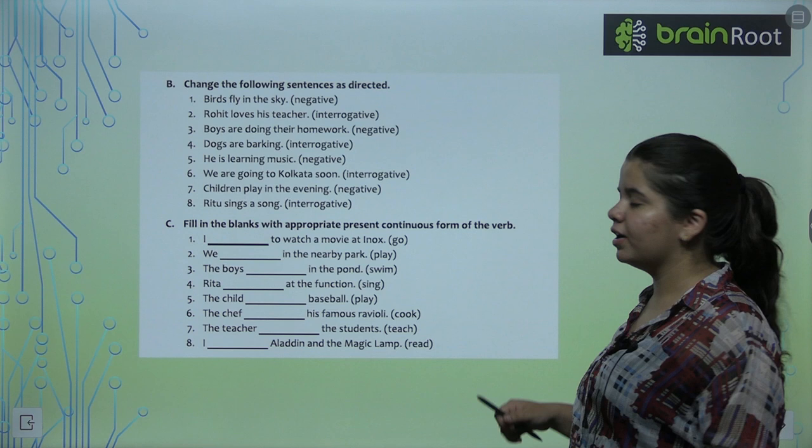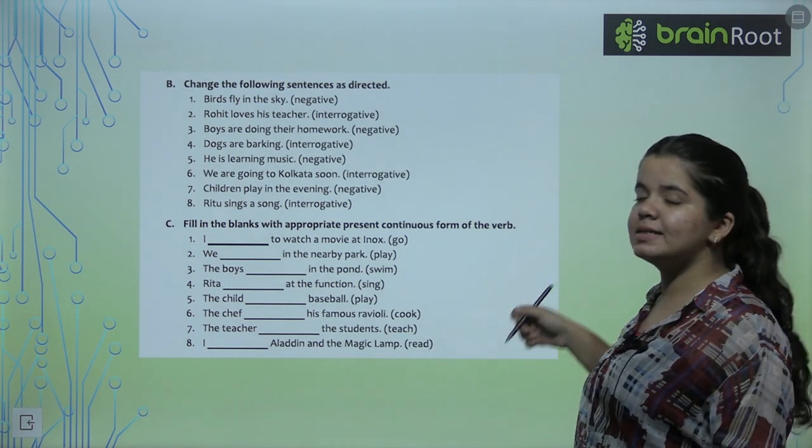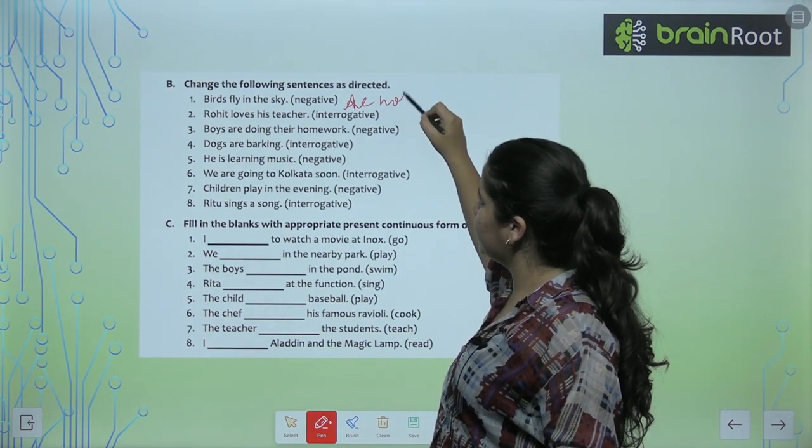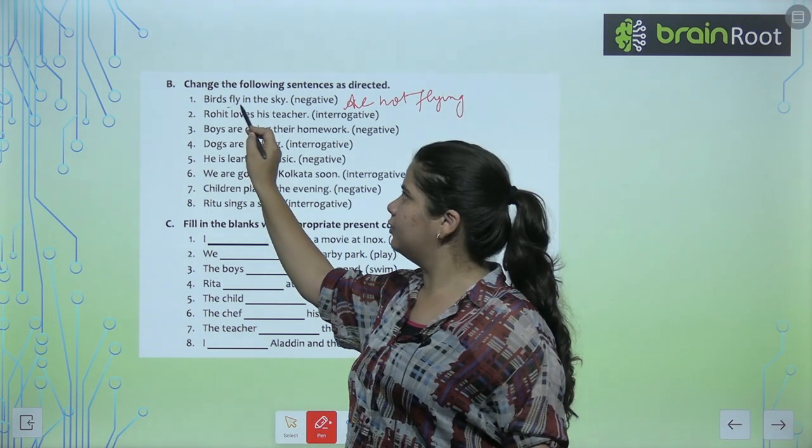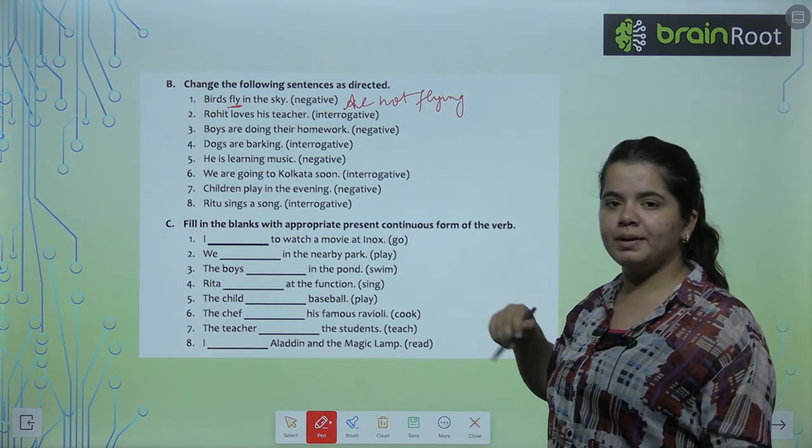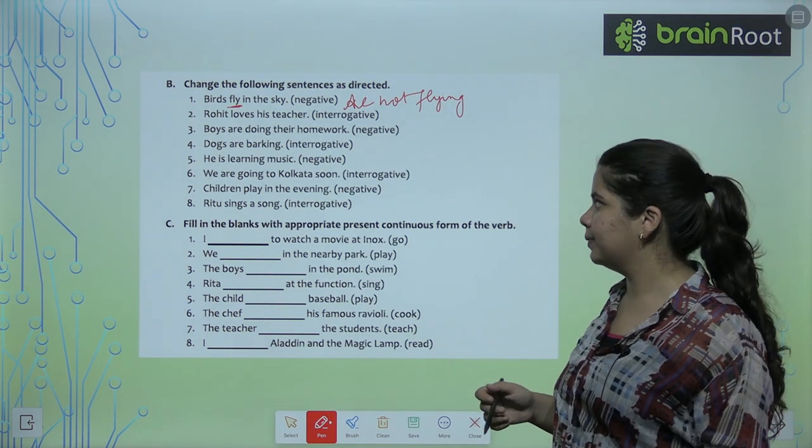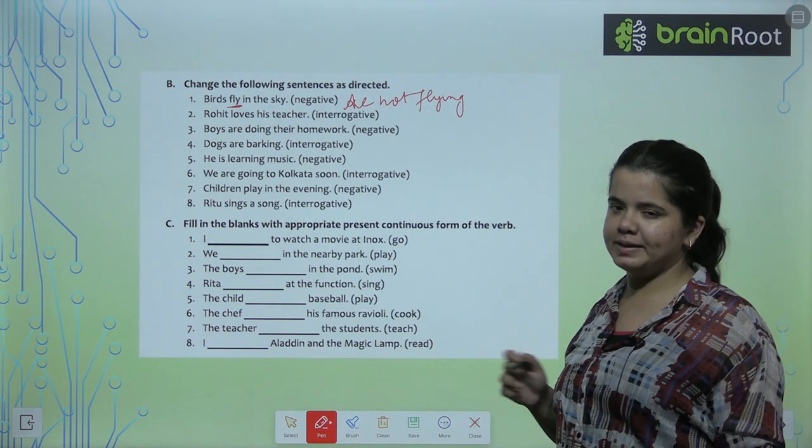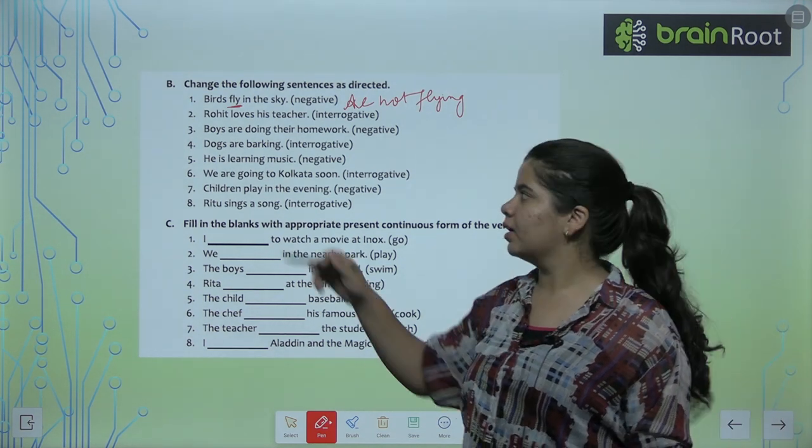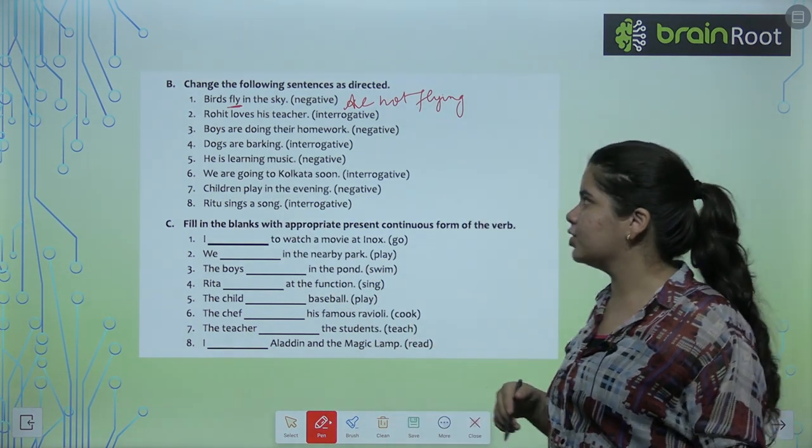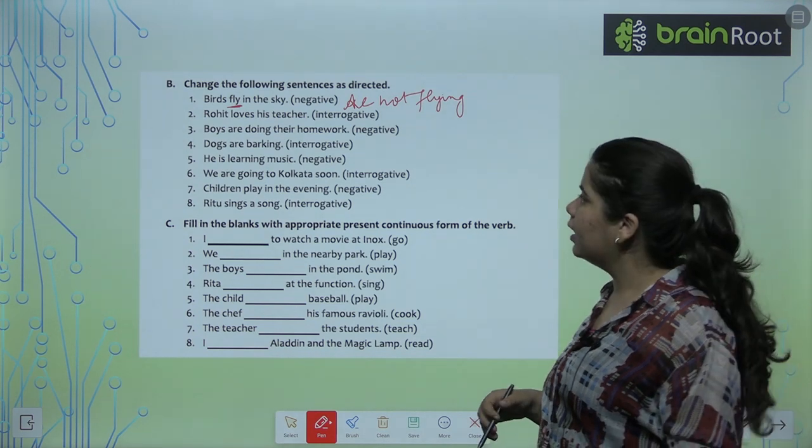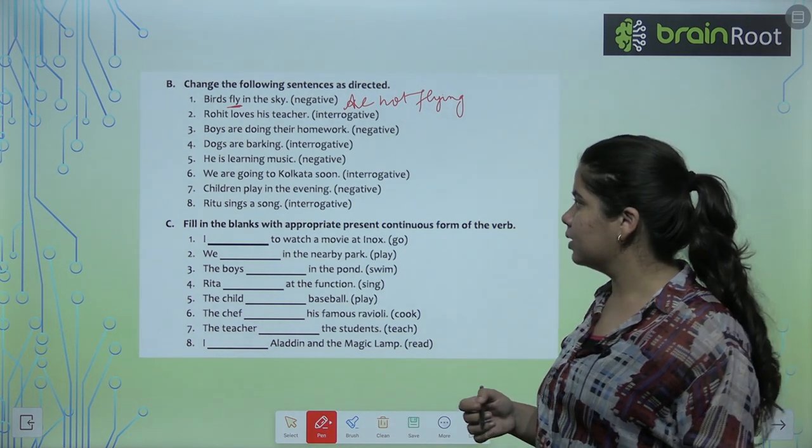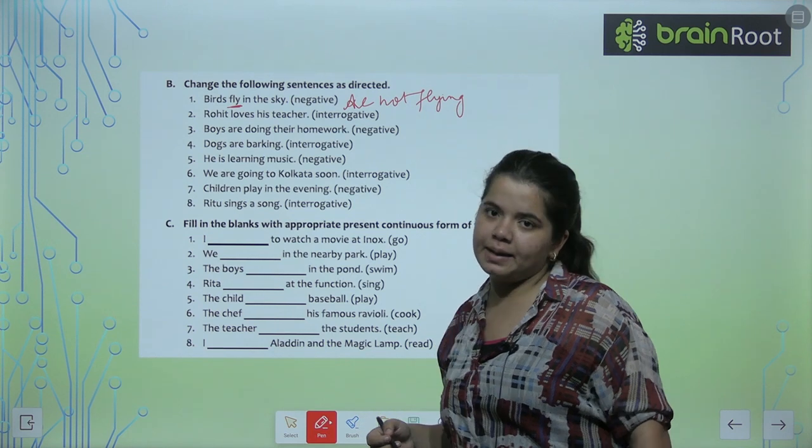Change the following sentences as directed. Birds fly in the sky. When we say negative, we have to change. The birds are not flying in the sky. Birds fly in the sky, what do you say? Are not flying, because we use continuous and negative in the sky. Rohit loves his teacher. Is Rohit loving his teacher? Repeating. Second one, now the second one. Rohit loves his teacher. Is Rohit loving his teacher? Boys are doing their homework. Negative means boys are not doing their homework. Dogs are barking. Are the dogs barking?